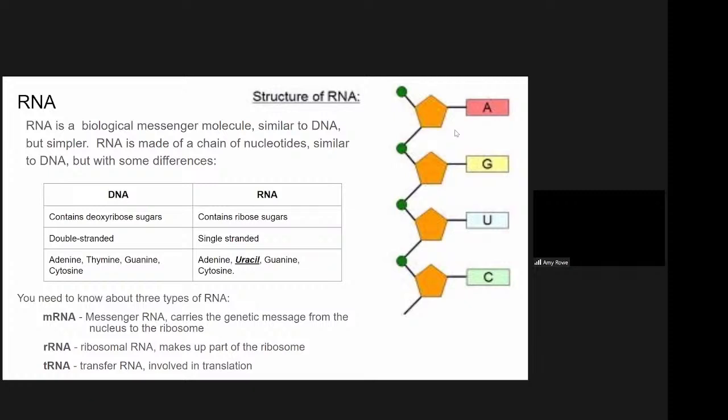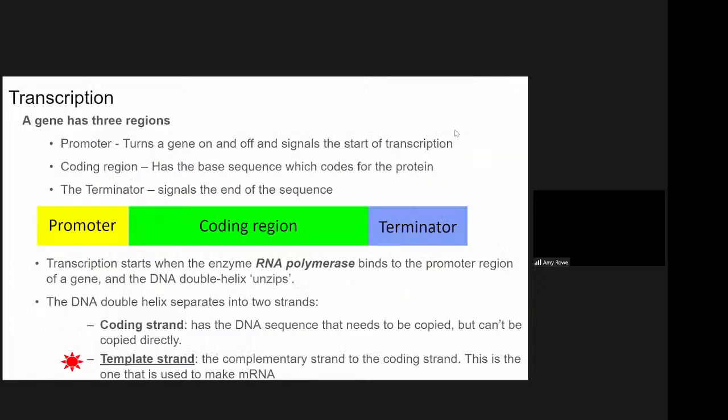So RNA is similar to DNA. It's a biological messenger molecule, but it's a lot simpler. So it's still made of a chain of nucleotides, but instead of being deoxyribose nucleotides, they're just ribose nucleotides. So there's a slightly different sugar molecule involved in making it up. Where DNA is double-stranded, forming that twisted ladder or double helix shape, RNA is just single-stranded. So you can see a copy of it there on the right-hand side of the screen. It's just a single strand of nucleotides linked together. Another difference that you'll remember for RNA is there is no thymine in RNA. So DNA is made up of four bases, adenine, thymine, guanine, and cytosine. Whereas RNA is made up of adenine, guanine, cytosine, and uracil. So instead of thymine, we replace it with uracil rather than thymine.